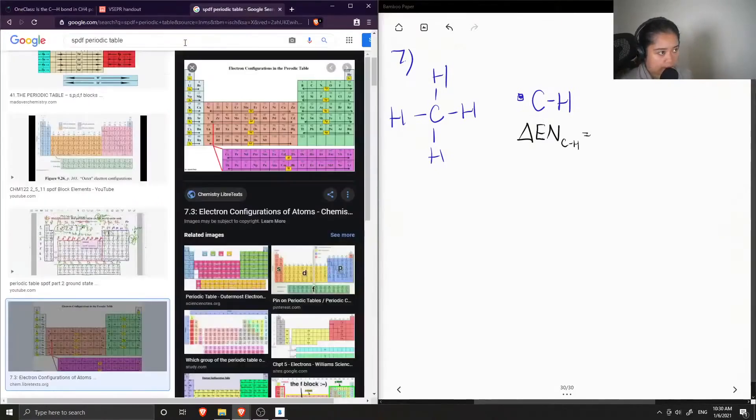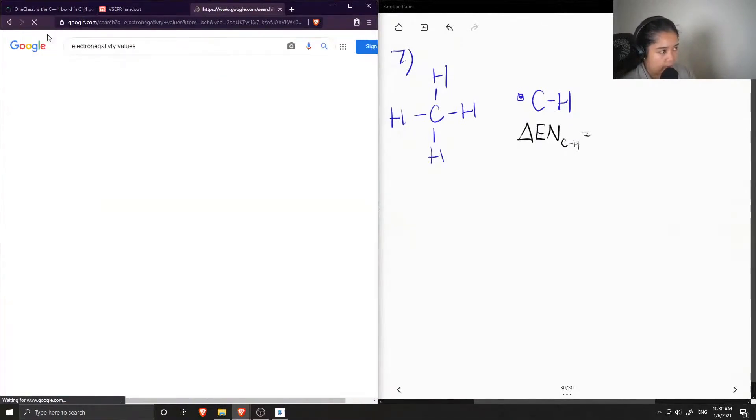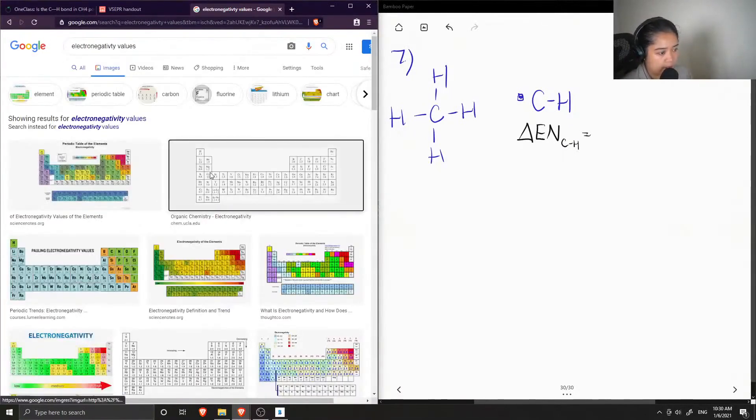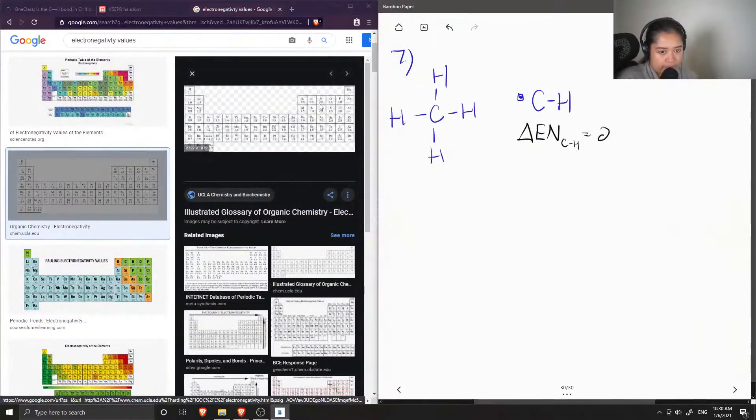Let's look up the electronegativity values for these two elements. Carbon has an electronegativity value of 2.5, and hydrogen is 2.1.